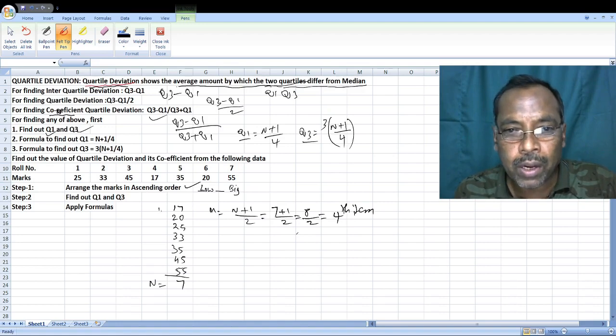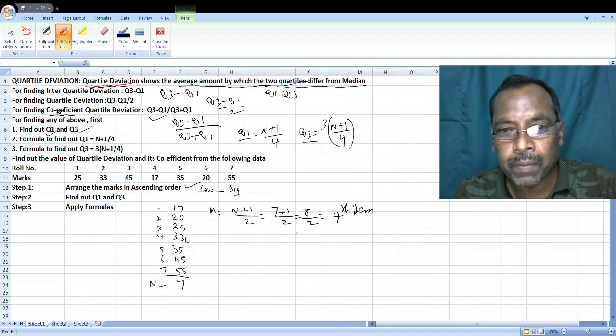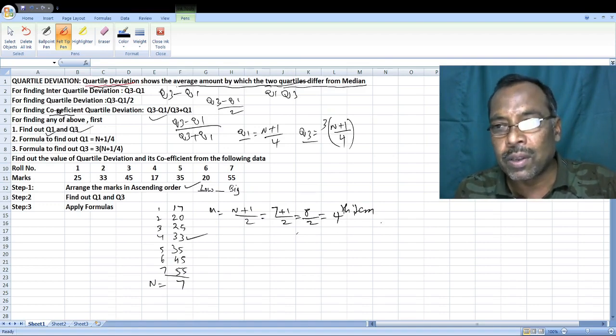Fourth item - one, two, three, four, five, six. The fourth item is this one. So median is equal to 33.